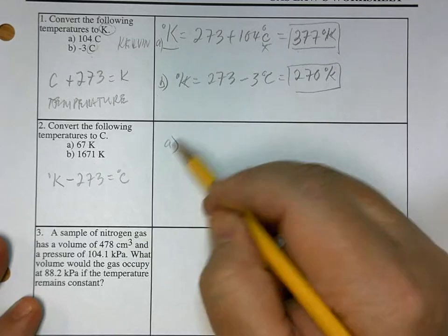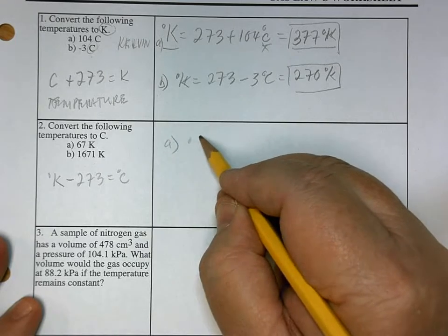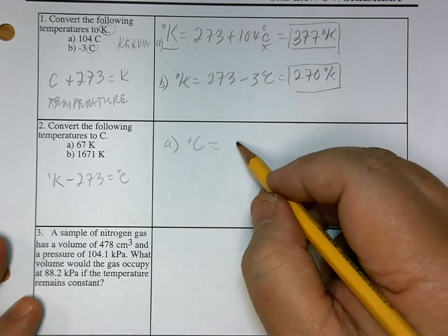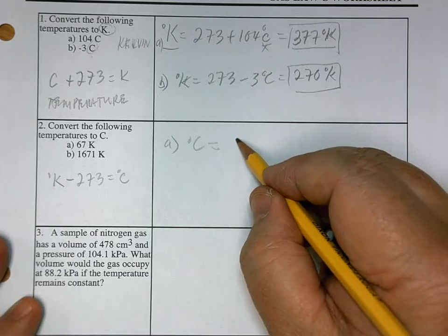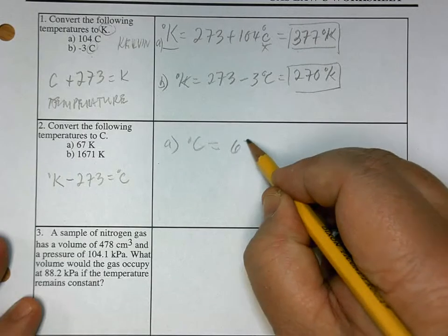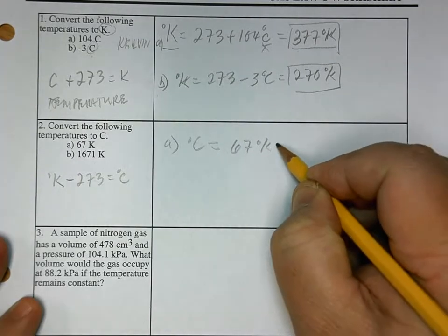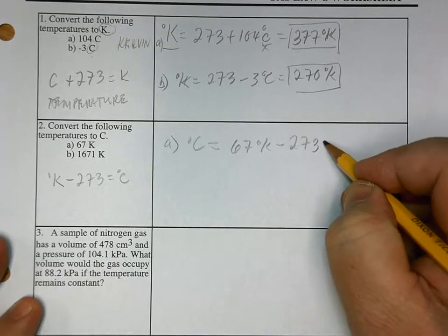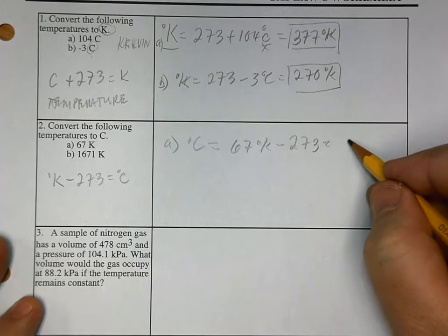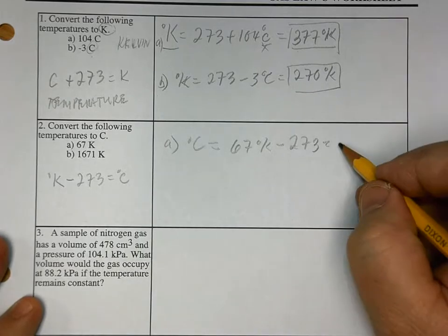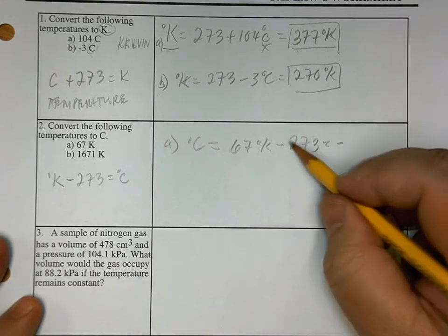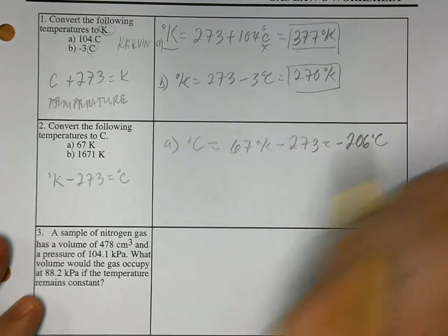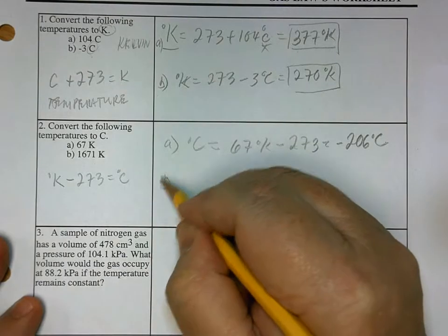So A, what is it? You're looking now for degrees C. Is equal to what? 67 degrees K minus 273 is equal to, look, negative 206 degrees centigrade.